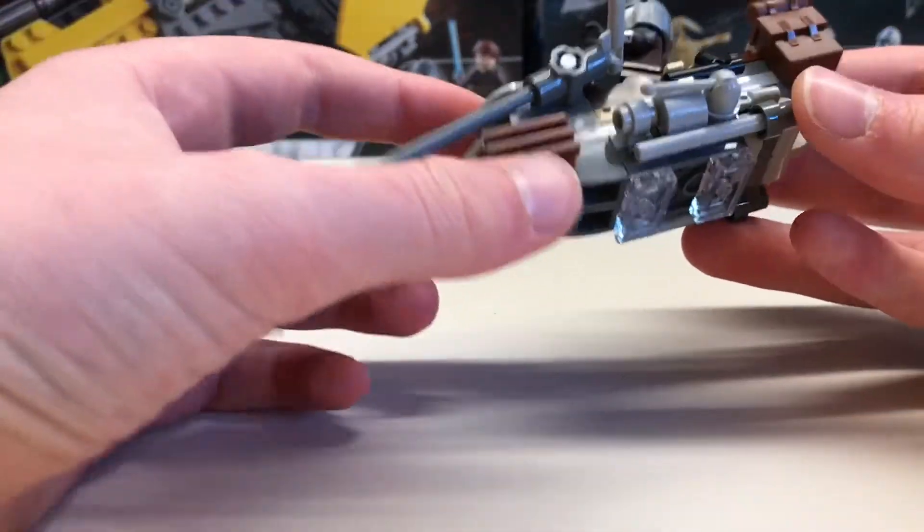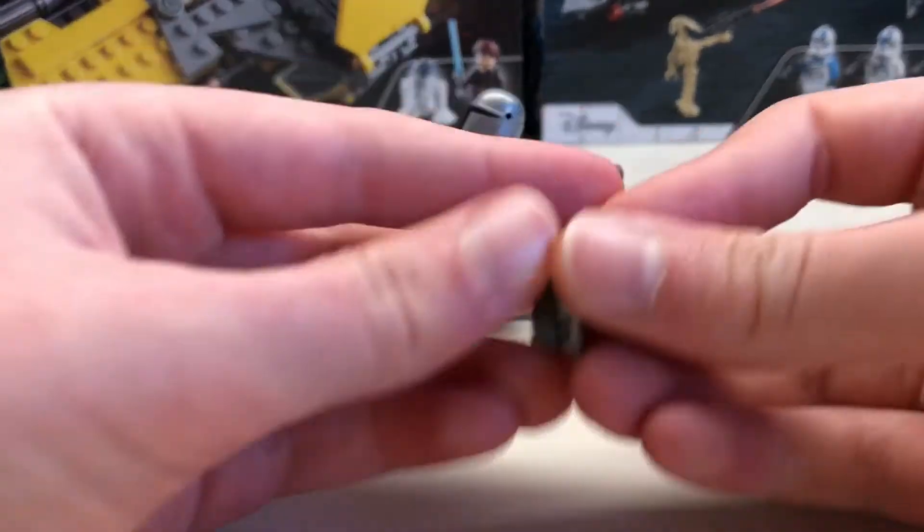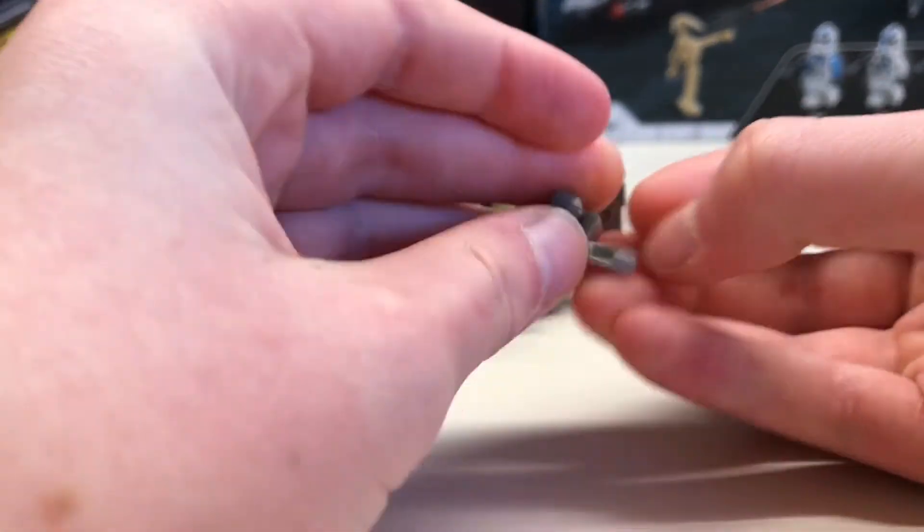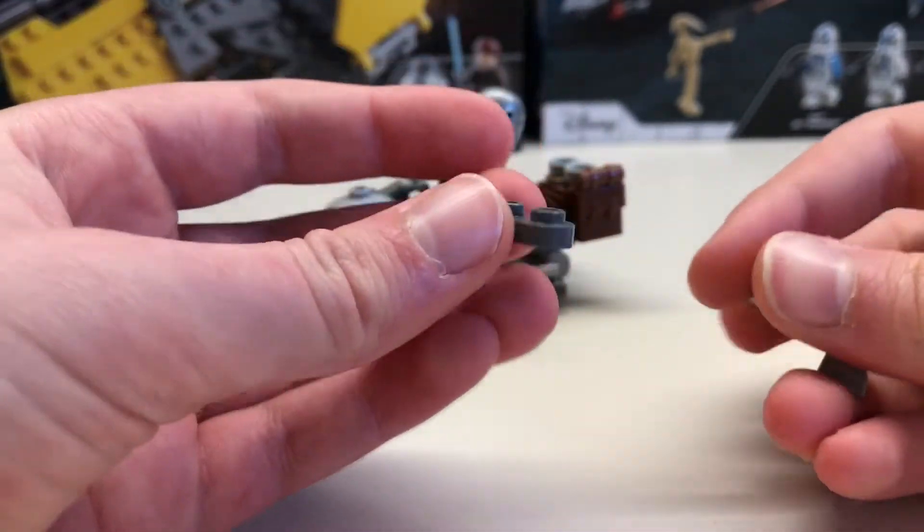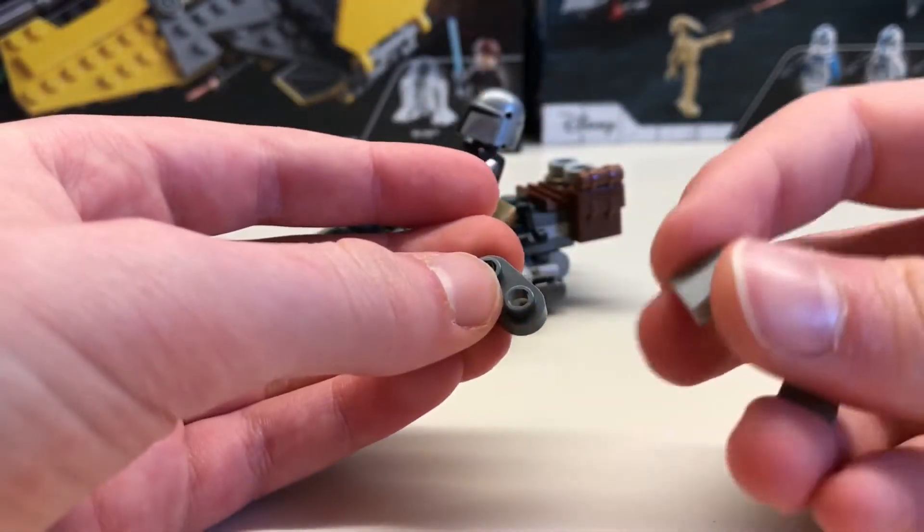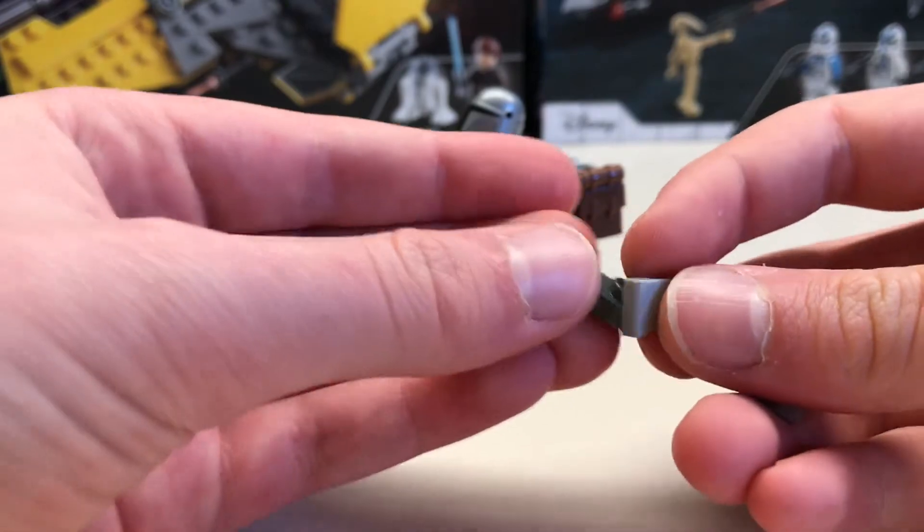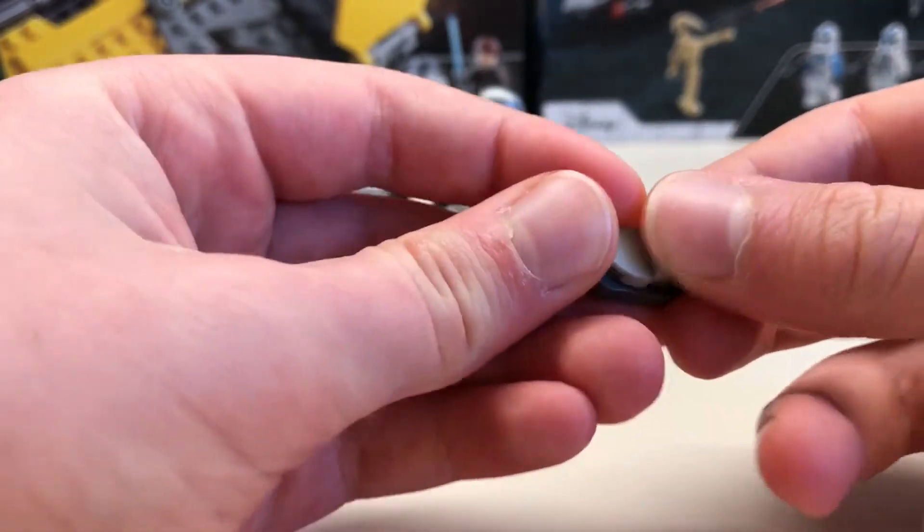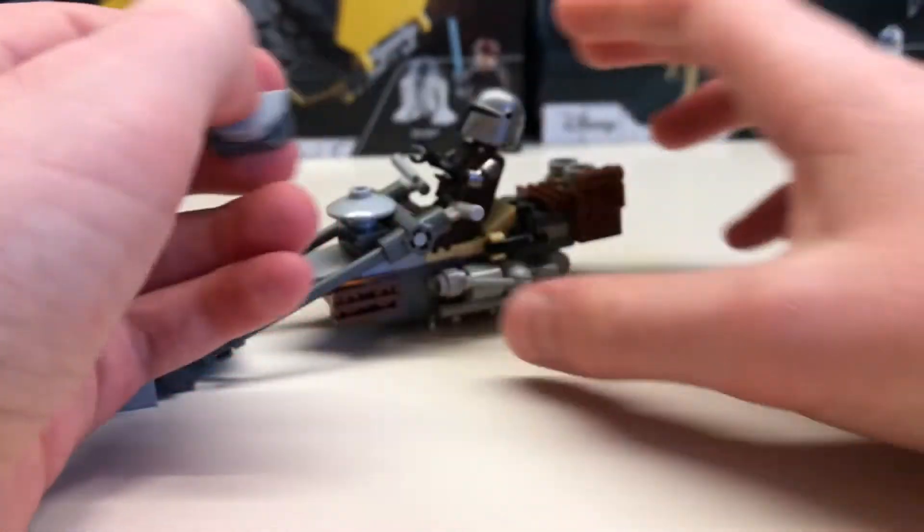Next, you're going to need to make two of this assembly, which is a 1x2 with holes in the middle and some light grey pizza pieces. These pizza pieces could be any color, but I just chose grey because I had it to hand.